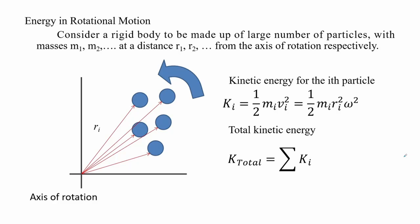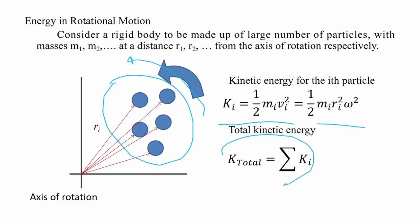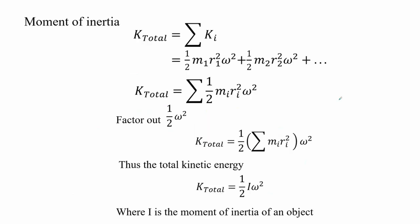When objects move they produce kinetic energy. For this system we imagine multiple particles at different positions and lengths. The kinetic energy expression for a single particle can be expressed in terms of its radius and angular velocity. For multiple bodies moving in circular motion, the total kinetic energy is the sum of these individual masses. We then rewrite the total kinetic energy for a rotating body and derive its expression in terms of the moment of inertia.